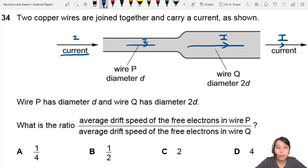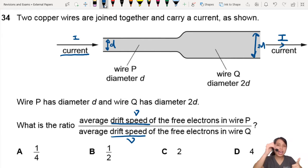Now we go to the other part of the question. Wire P has diameter d, so this is diameter d, and this is two times, so diameter 2d. What's the ratio average drift speed of the free electrons? When you see drift speed, you see diameter, you should think of the equation that is written in the first page of the formula booklet in physics. It's written as ANVQ, but I remember it fondly as NARVAE equation.